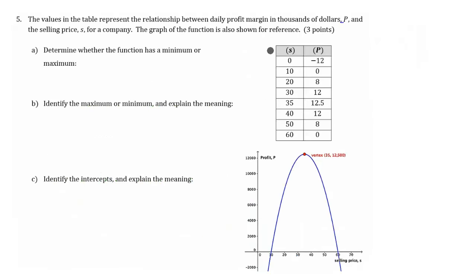Question five is comparing selling price, which is S in this column, compared to profit margin, which is capital P in this column. Part A is asking us if there's a minimum or maximum. If you look at the graph right here, you can see that the graph is an arc, so that's going to tell us that we have a maximum, and that's going to be at 12,500.